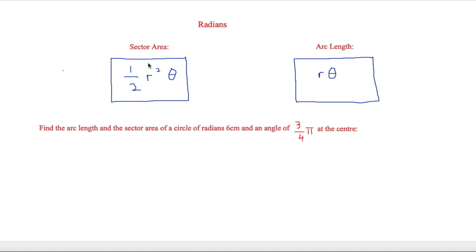For the sector area we use half times r squared times theta: that's half times 6 squared times three-quarters π. Typing that into the calculator gives 27 over 2 π, in centimetres squared.